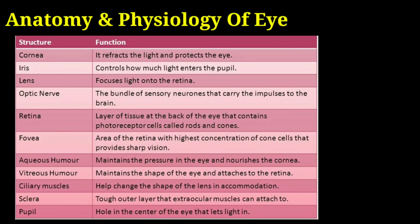Sixth, the fovea: the area of the retina with the highest concentration of cone cells that provides sharp vision. Seventh, aqueous humor: maintains pressure in the eye and nourishes the cornea. Eighth, vitreous humor: maintains the shape of the eye and attaches to the retina. Ninth, ciliary muscles: help change the shape of the lens in accommodation. Tenth, sclera: the tough outer layer to which extraocular muscles can attach. And finally, the pupil: the hole in the center of the eye that lets light in.